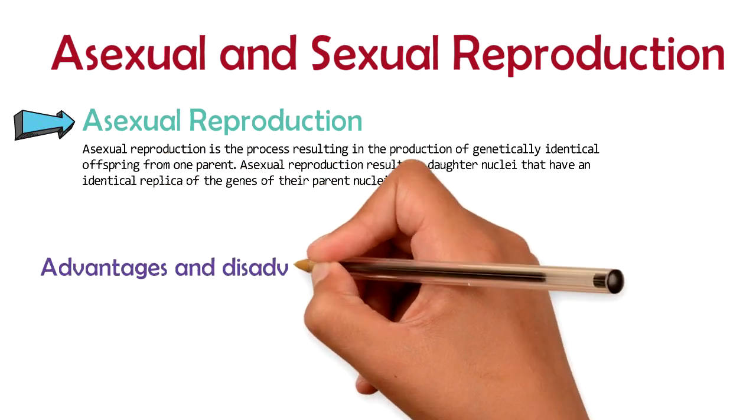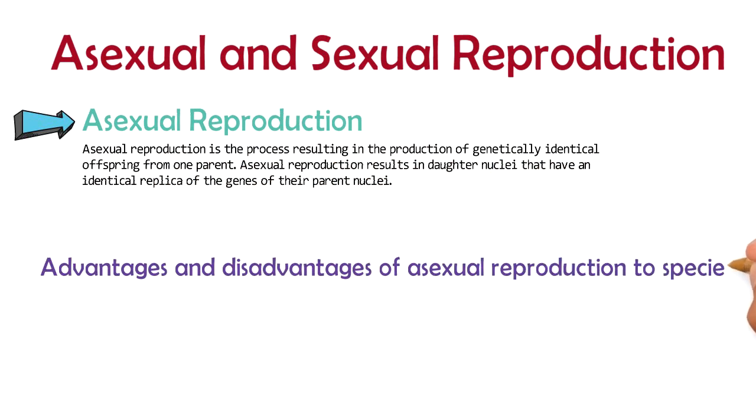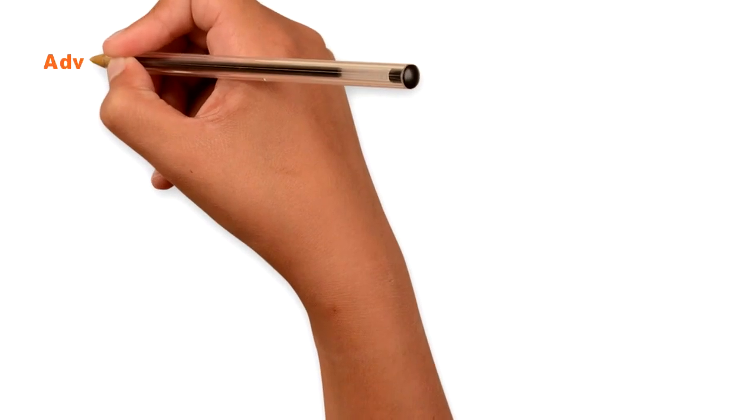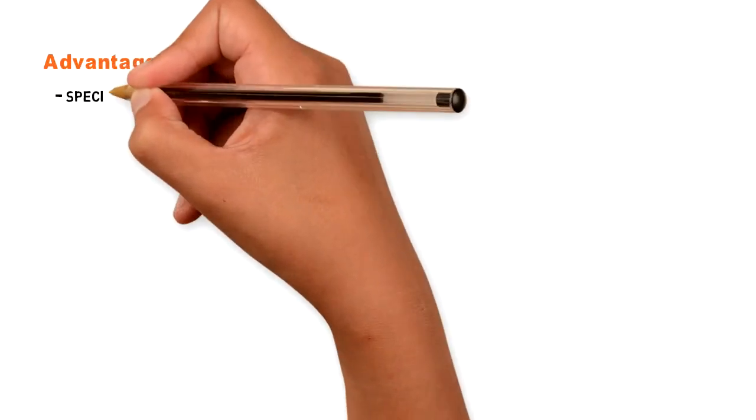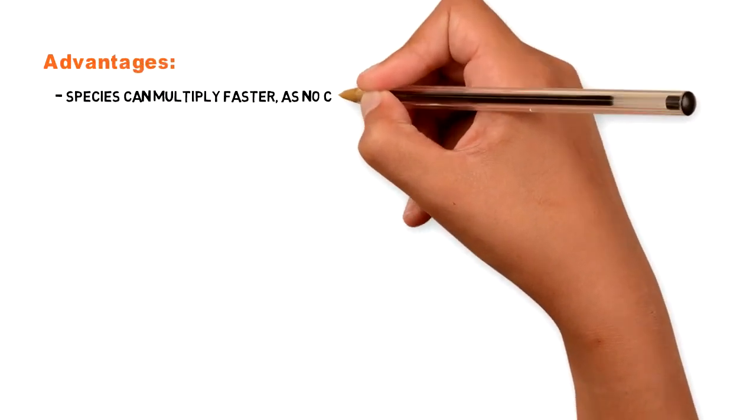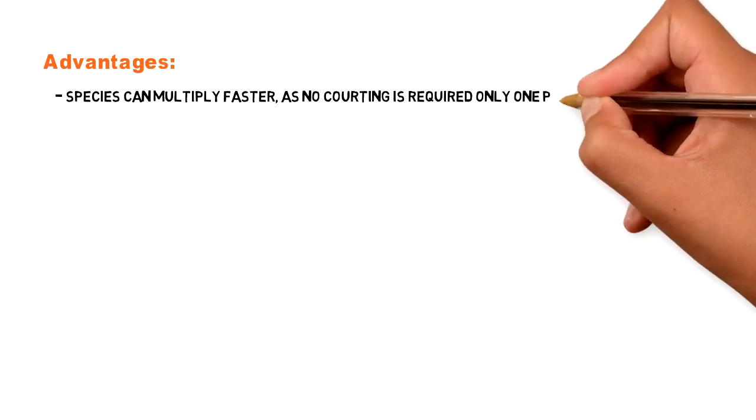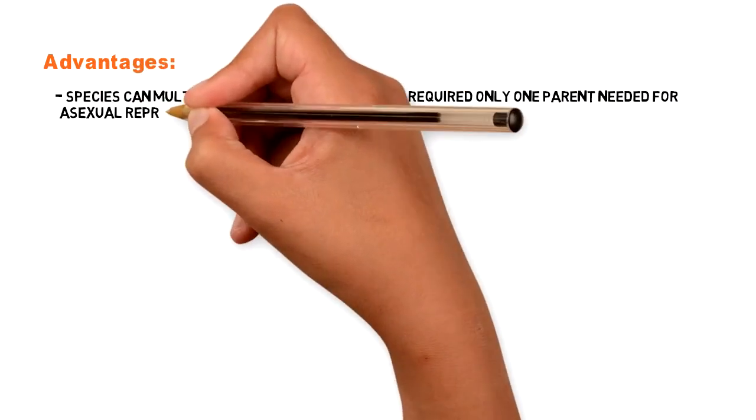Advantages and disadvantages of asexual reproduction to species. Advantages: Species can multiply faster, as no courting is required, only one parent needed for asexual reproduction.